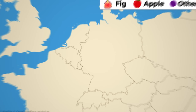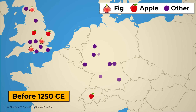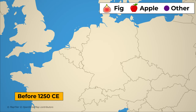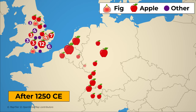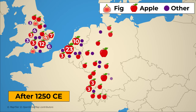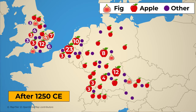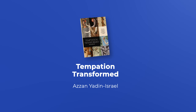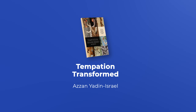The same thing occurred in the rest of Western Europe too. Prior to 1250, the apple hardly featured at all; afterwards it is the overwhelming majority. So what caused this change? How did we get from figs and pomegranates to the apple? Professor Azan Yadin Israel explains in his book Temptation Transformed that it's all to do with language.